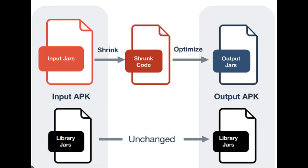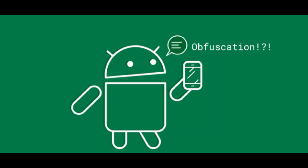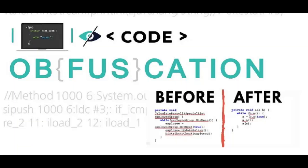ProGuard shrinks the application's size by removing unused classes and methods. By obfuscating the code, it makes it difficult to reverse engineer the application. ProGuard is a great tool for creating a production-ready application. It assists in reducing code and making the app faster. It obfuscates the code, which means it changes names to something smaller — for example, a class named MainActivity will be changed to 'b'.